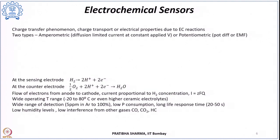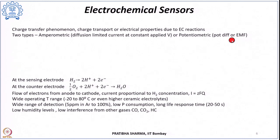The next type is the electrochemical sensor, which works on the principle of charge transfer between electrodes with an electrolytic medium — based on electrical properties arising from electrochemical reactions. These sensors are of two types: amperometric, where diffusion-limited current is measured at constant voltage, and potentiometric, where the potential difference or EMF is measured.